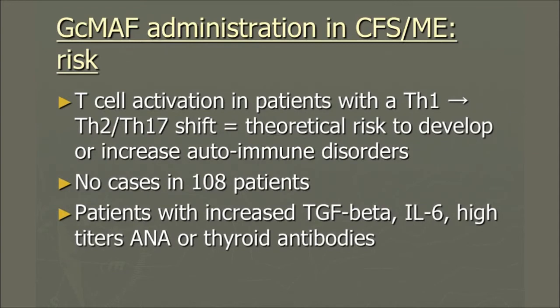What is the risk of GC-MAF administration in ME/CFS? GC-MAF is actually a natural substance — it's something that healthy people produce. Our immune system makes it from GC protein. We know that if there's T-cell activation with a Th1-to-Th2 shift — so mainly Th2 and also Th17 — there are theoretical risks of developing or worsening autoimmune disorders. My colleagues say you risk having more autoimmune disorders in compassionate use. However, we have no cases in these 108 patients of developing autoimmune disease after nearly a year of follow-up.